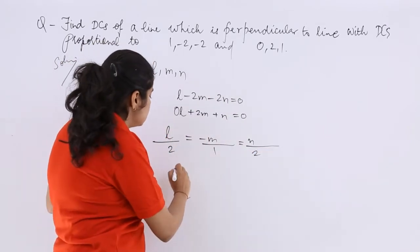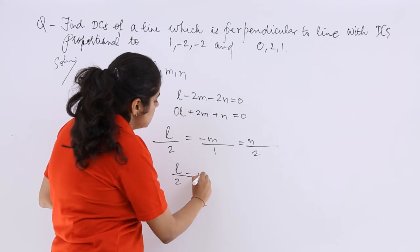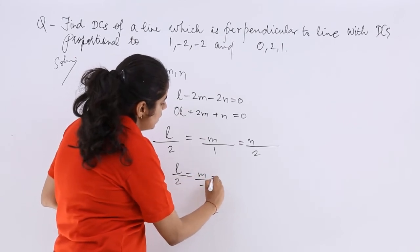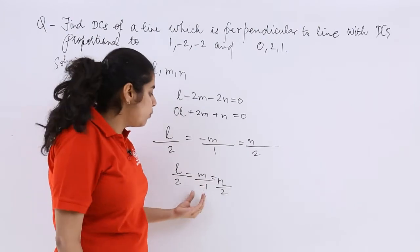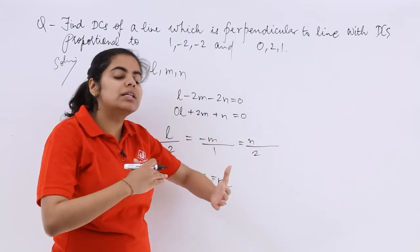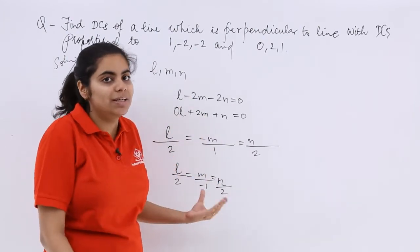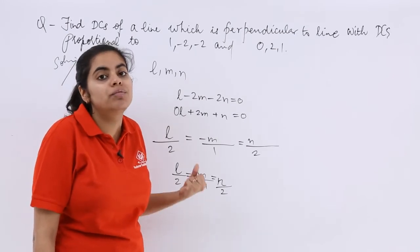So we find that the result is something like this. So you have the required result in the form 2, -1, 2. So whatever the result is, it is proportional to 2, -1, 2 but that is in the terms of direction ratios.